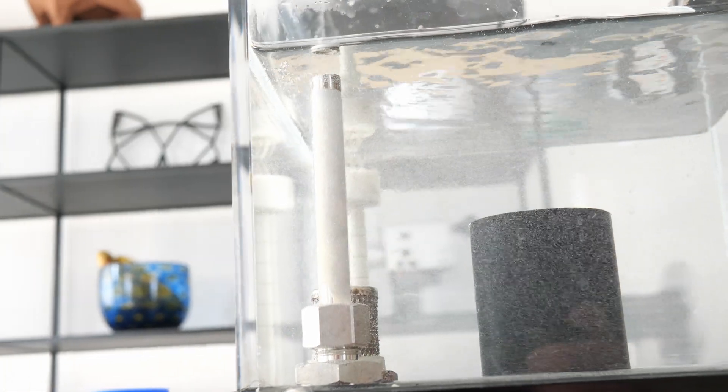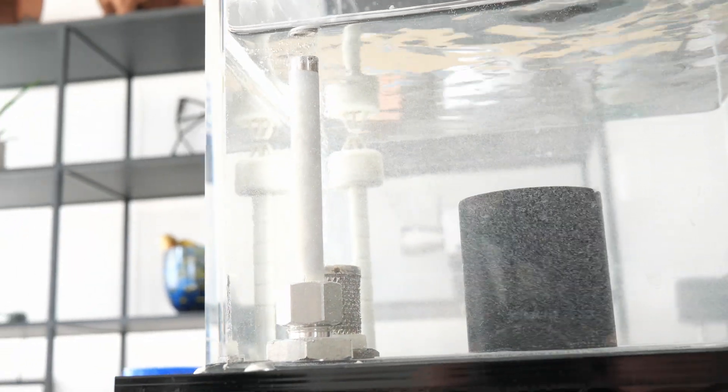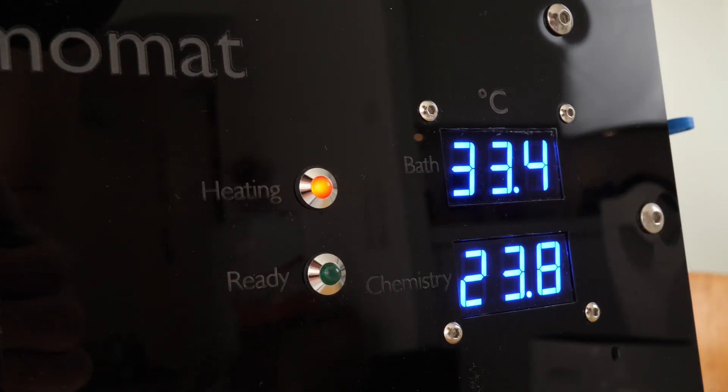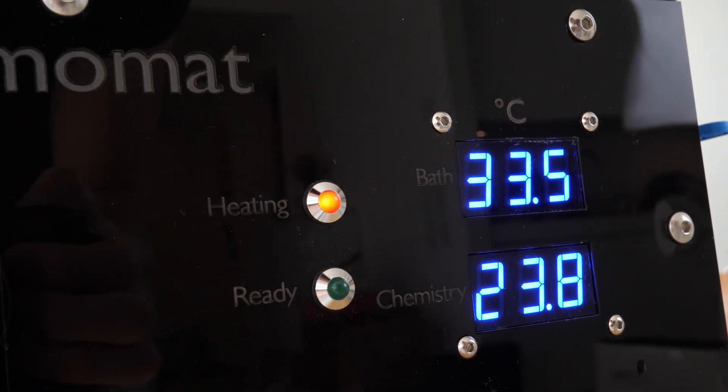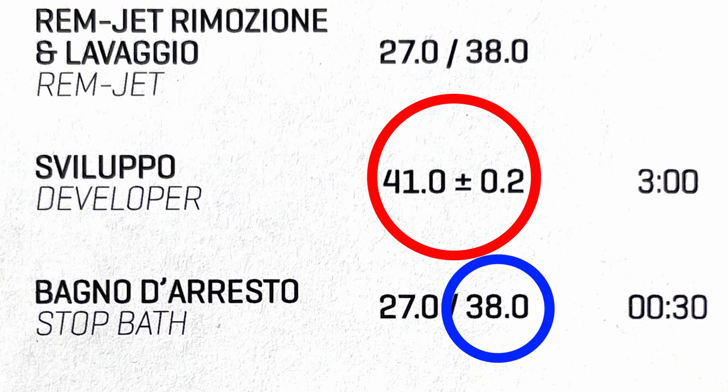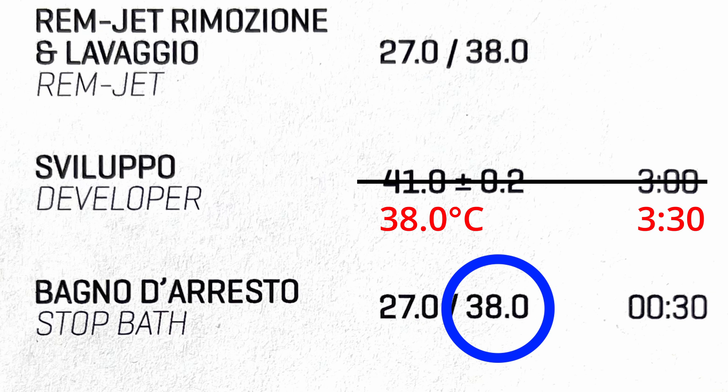First of all, the temperature. The Filmomart can only maintain one temperature for all steps. So we can't do the developer at 41 degrees and the rest at 38. But instead, we can do the developer at 38 as well and simply increase the development time.